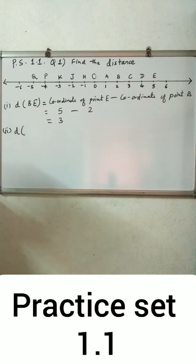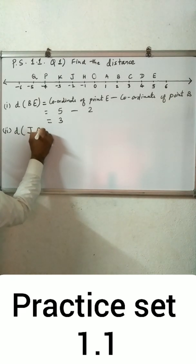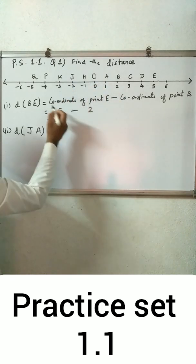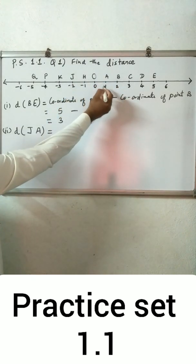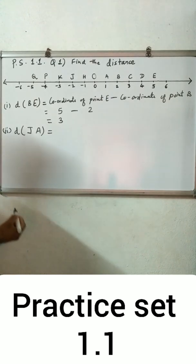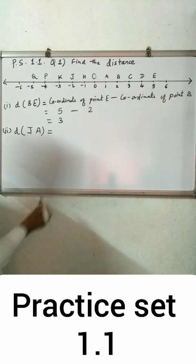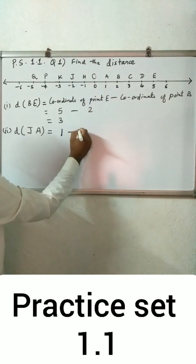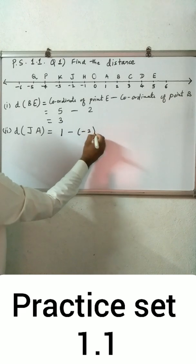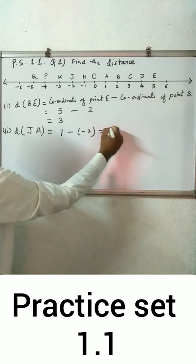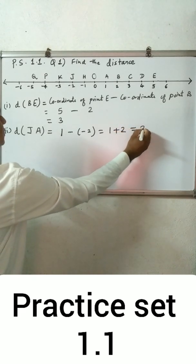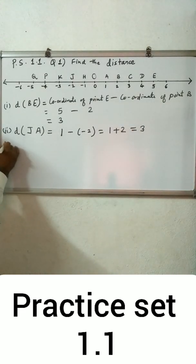Second, distance JA. Coordinate of J is minus 2 and coordinate of A is 1. Since 1 is greater than minus 2, distance JA equals coordinate of A minus coordinate of J: 1 minus (minus 2) = 1 plus 2 = 3. So distance JA is also 3.